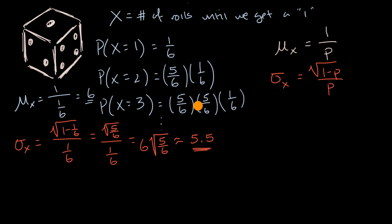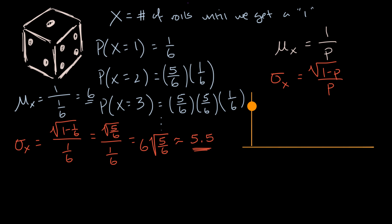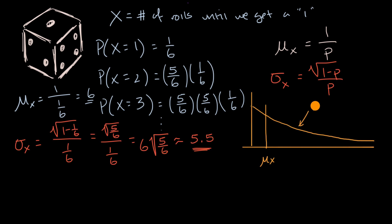What's interesting about a geometric random variable is the lowest value is one, but it can go arbitrarily higher — you could get really unlucky and it might take a thousand or even a million rolls to get that one. So the distribution tends to have the mean somewhere in the middle-left with a very long tail to the right — this is classic right skew. All geometric random variable distributions are right skewed, with an infinitely long tail of values to the right.